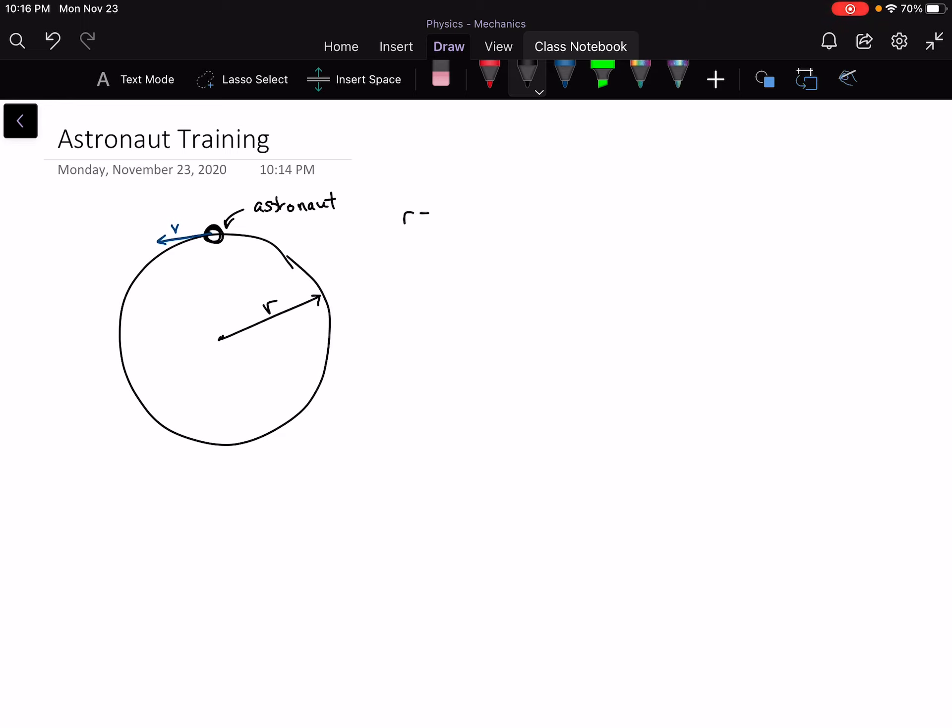Okay, so radius 5 meters, speed constant. And there's our astronaut moving around his circle. Uniform circular motion.